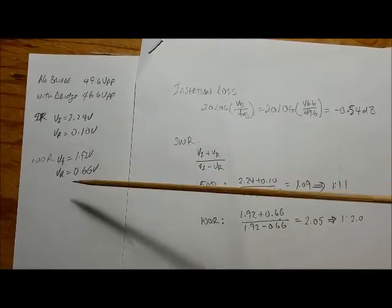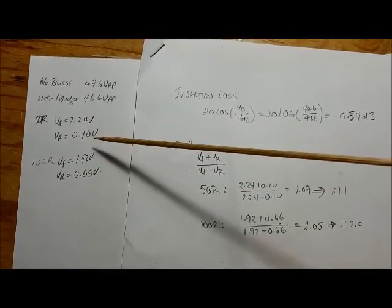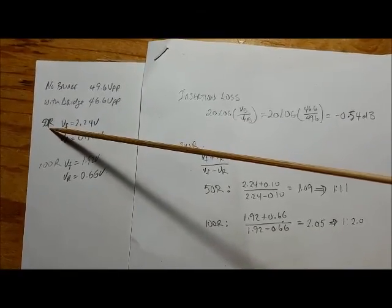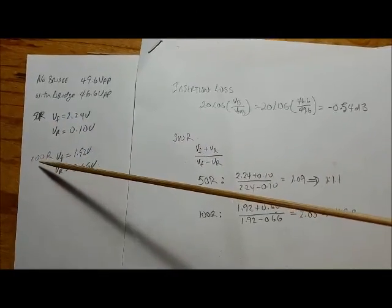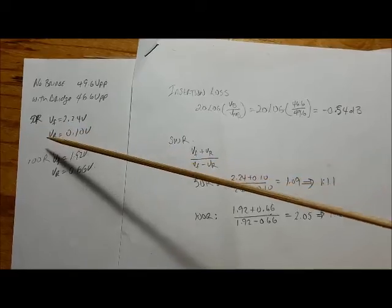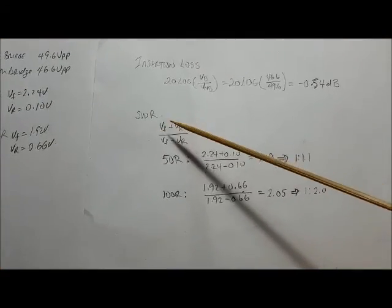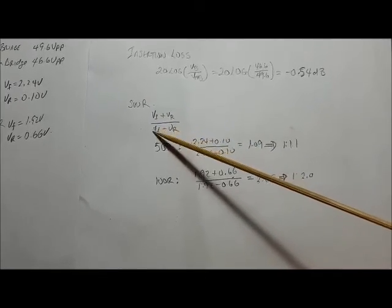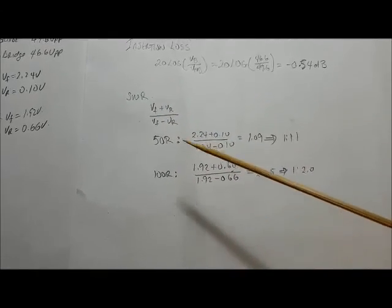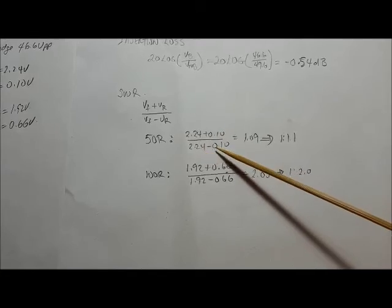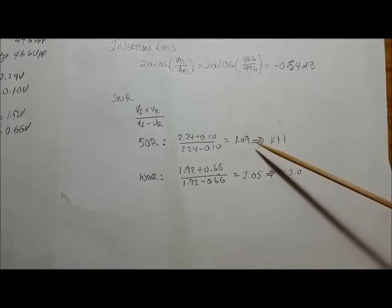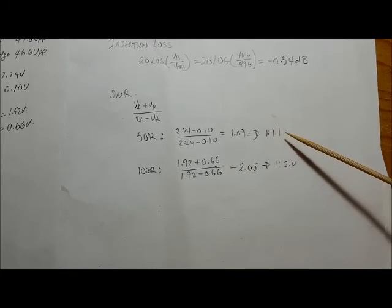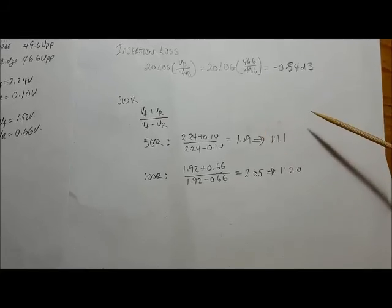So here's the voltages we measured at the bridge for the forward and reverse voltages in the case when the transceiver is terminated with 50 ohms and when it's terminated with 100 ohms. So when it's terminated 50 ohms, we can calculate the SWR, and it's basically the sum of the forward and reverse voltages divided by the difference, and that gives us our SWR. So in the case of 50 ohms, we plug in the values and we come out with 1.09, and that's giving us an SWR of 1 to 1.1. So that is what we would expect for a 50 ohm load.